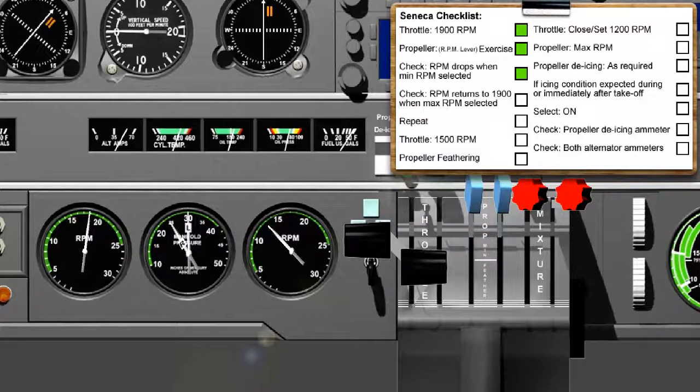Pull the propeller control lever to minimum and allow the RPM to decrease by 200. At this point, it's not necessary to wait until the RPM falls to the absolute lowest possible value. You're only checking for the correct functioning of the propeller control system.